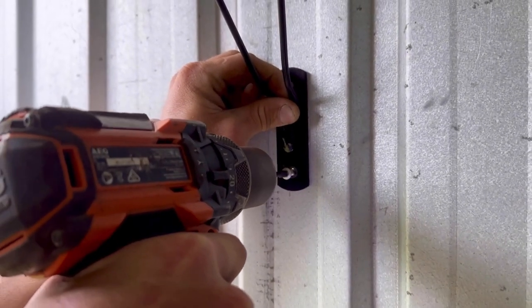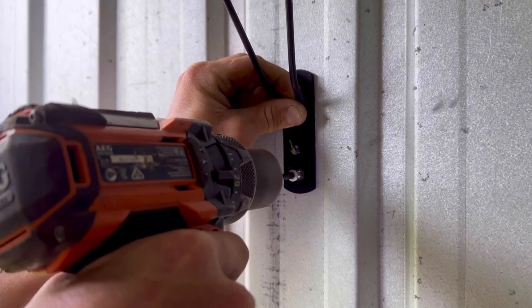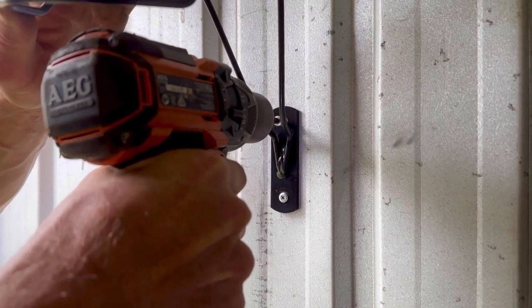Screw into the wall like so, starting with the bottom hole to secure the bracket into place, following with the top hole for a flush finish.